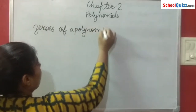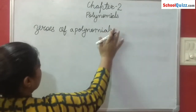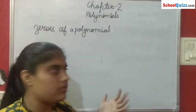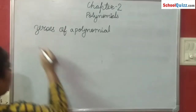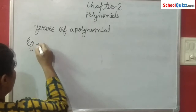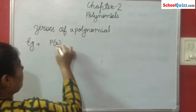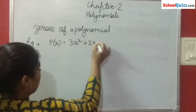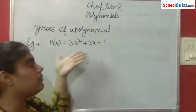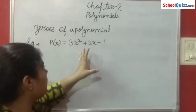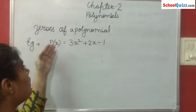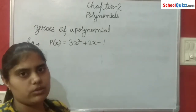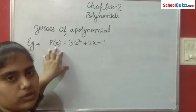So basically, what are zeros of a polynomial? Polynomial کے zeros کیا ہوتا ہے? We will understand this with the help of an example. Suppose we have a polynomial equation P(x) equals to 3x square plus 2x minus 1. ہم نے P(x) کیوں رکھا ہے? Because in the whole equation we have used the variable x. So our equation is P(x).